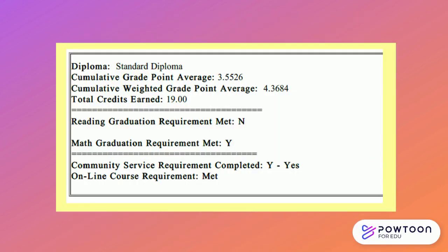Instead, you want to look at the large box below. There is a lot of important information found in this box. It tells you whether you are on track to earn the standard high school diploma. First it lists the cumulative GPA — this is the grade point average that you want to use when thinking about high school graduation. This student has a cumulative GPA of 3.5526. Because this is above the graduation requirement of a 2.0, this student is on track.